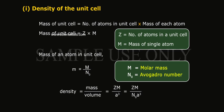Therefore density is equal to mass by volume, which is equal to ZM by a³, which is equal to ZM by N₀a³.